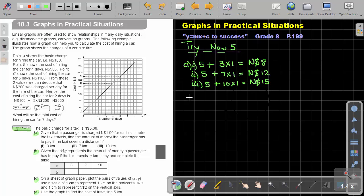Number B. Given that Y represents the amount of money a passenger has to pay if the taxi covers X kilometers, copy and complete the table. So if I draw a table, we're just going to create a table here with a ruler. This is my X, this is my Y, and we're just going to put this information in the table. So it was 3, it was 7, and it was 10. And that answer was 8, and it was 12, and it was 15. There is my answers.